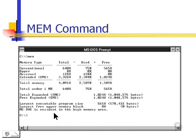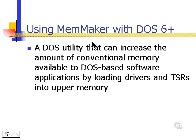DOS has a way of getting out of its own way by loading itself high into the first 64K of extended memory. This frees up even more memory in the first 640K of conventional memory. In order to change the way we are allocating memory, we can use a program called MemMaker. MemMaker came out with DOS 6.0, and any DOS above 6.0 includes MemMaker. It is a utility that can increase the amount of conventional memory available to DOS-based software applications by loading drivers and TSRs into upper memory.